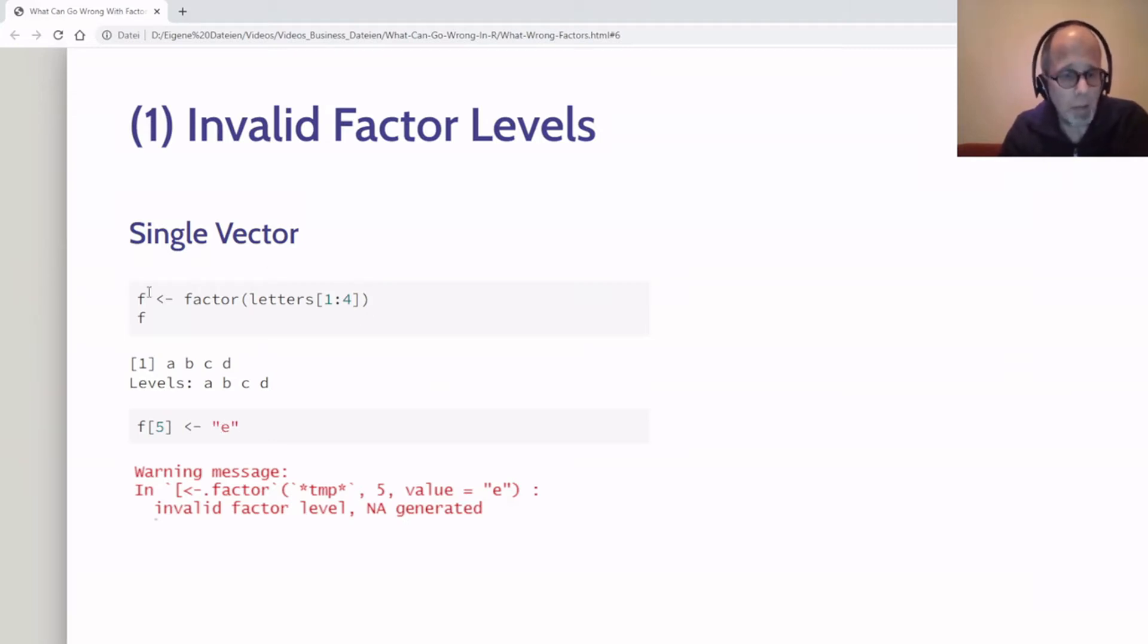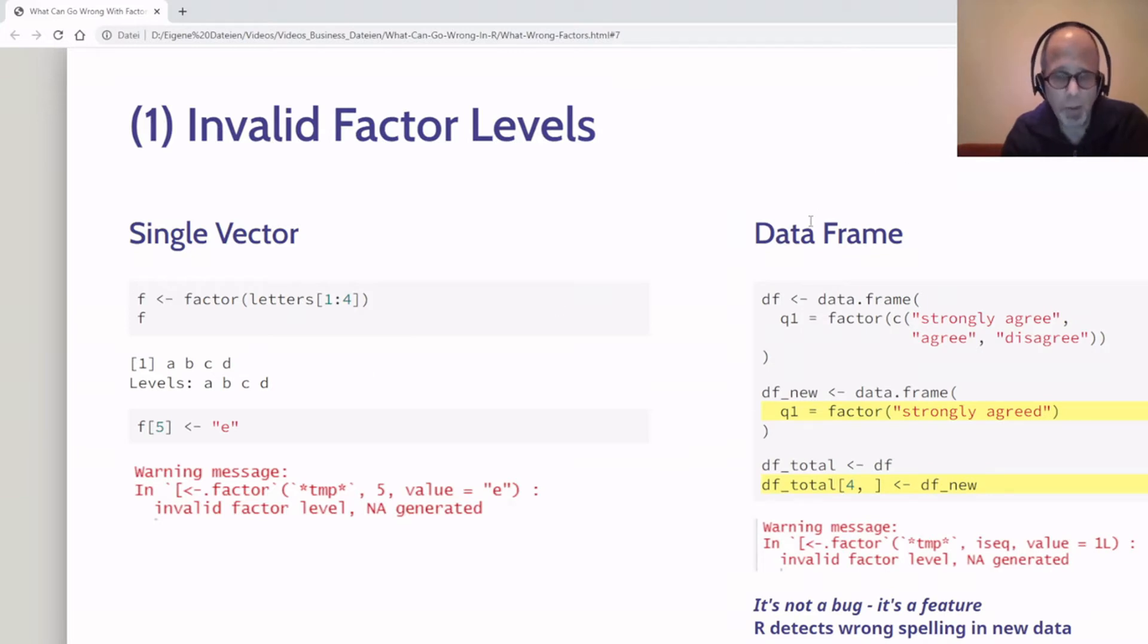In data analysis, in many cases you won't work with factors as single vectors but probably as variables inside a data frame. I created a second example here on the right hand side—a typical use case where we can argue this behavior of R is actually not a bug but a feature. Here I have a Likert scale with three entries: strongly agree, agree, and disagree. These are clearly defined categories, and we want to make sure the spelling is always correct.